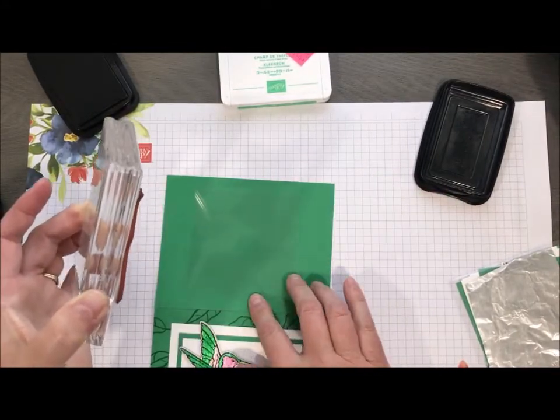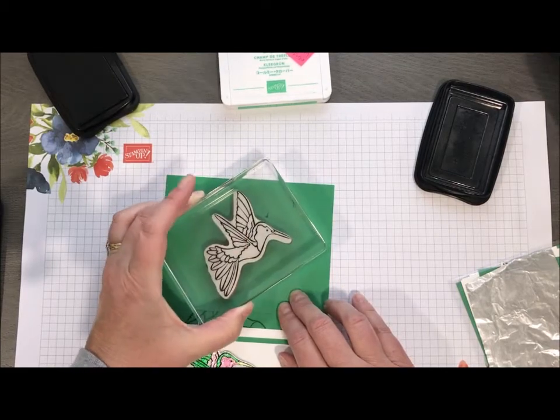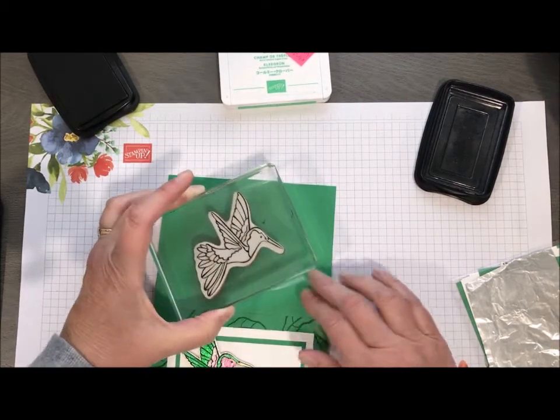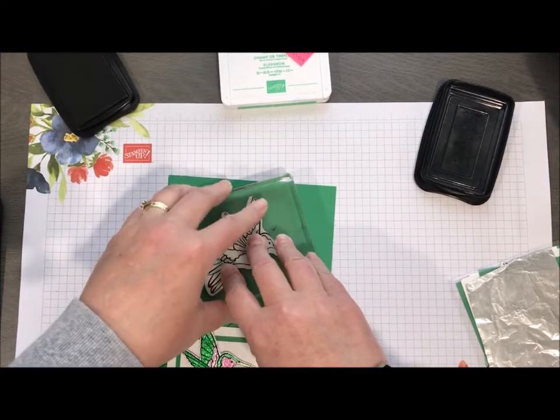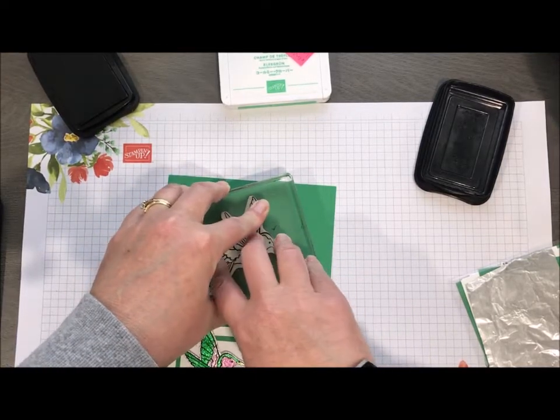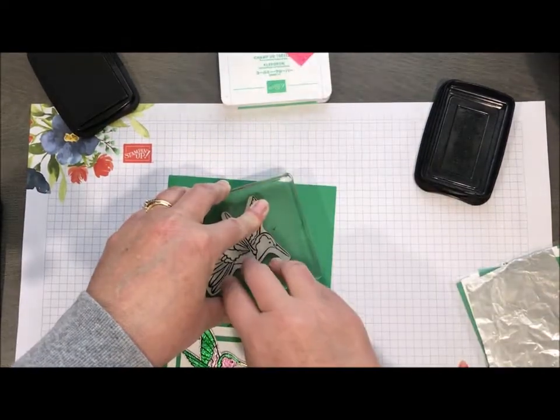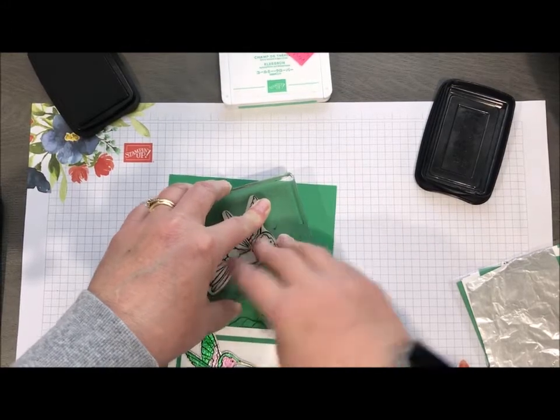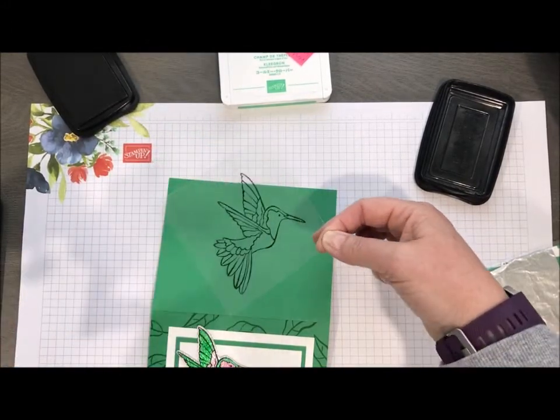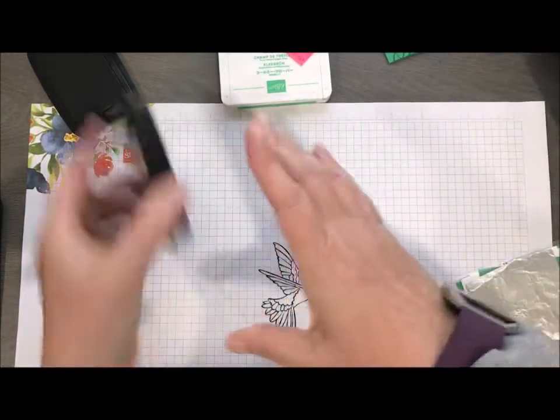When you lay this down, that window sheet is very slippery, so you want to be careful when you first lay this down when you go to put your stamp on. It kind of wants to slide on you, so just be real careful that you just get that straight up and straight down. Okay, so there's our gorgeous hummingbird.